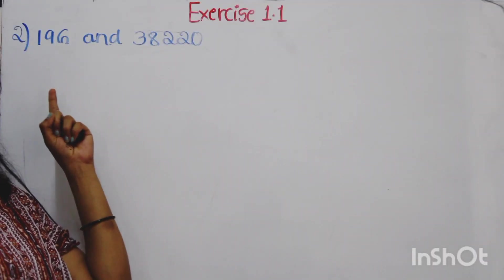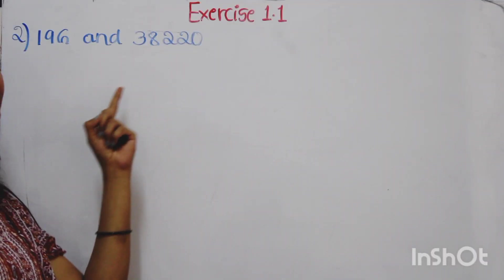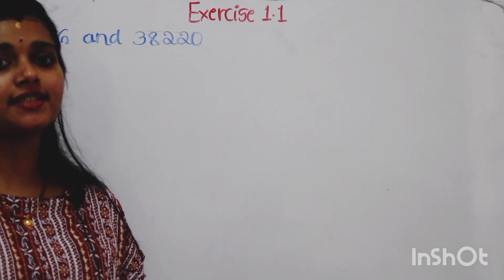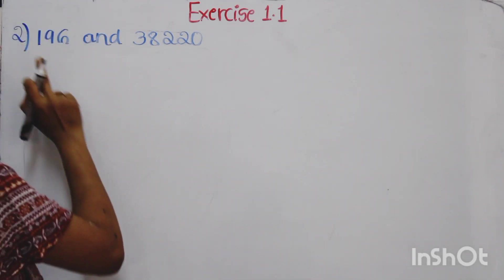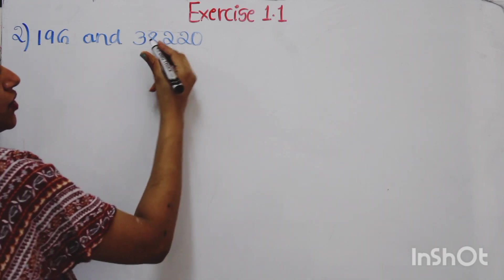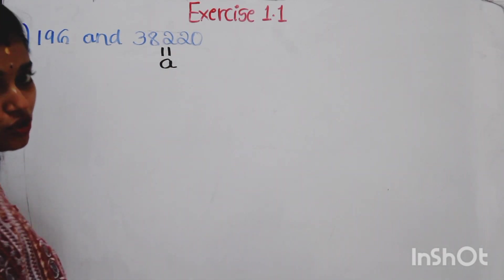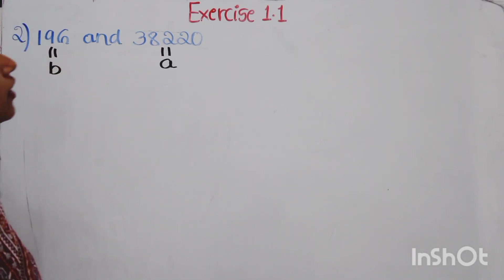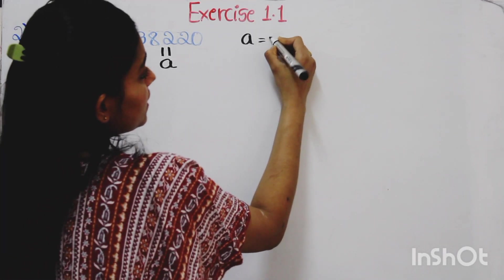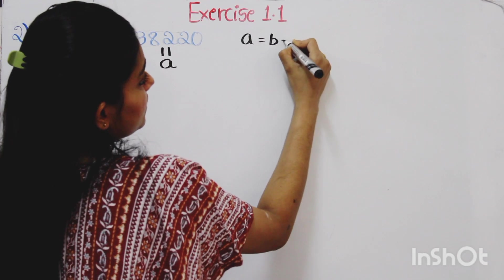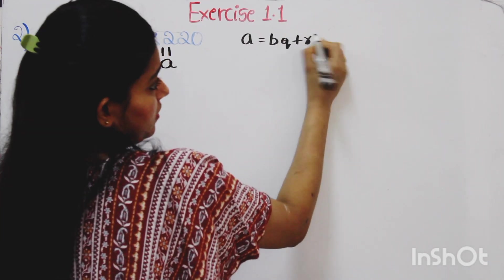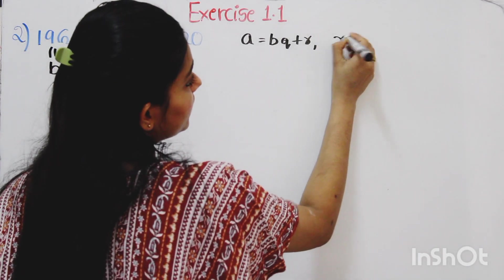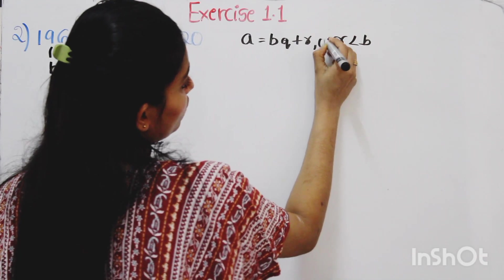The next question is 196 and 38,220. Here also we have to find HCF using Euclid's lemma. The first step is to find the greater number. Here the greater number is 38,220. Take the greater number as A and the smaller number as B. For any positive integers, there exist unique integers Q and R such that A equals BQ plus R, where R is less than B and greater than or equal to 0.